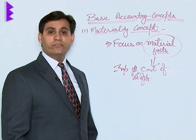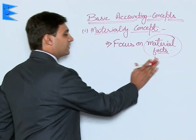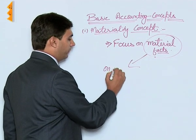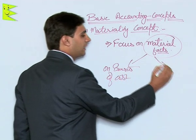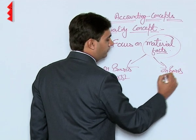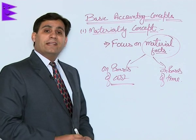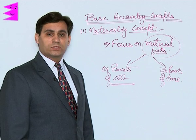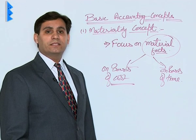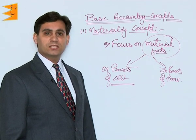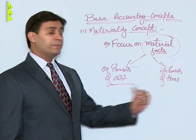Material facts can be classified on the basis of cost and on the basis of time. On the basis of cost, items of lower values or lesser amounts should be clubbed with other items — not ignored, but recorded as miscellaneous expenditures in a journal entry.